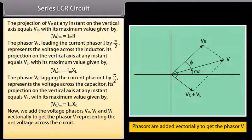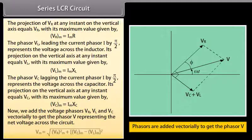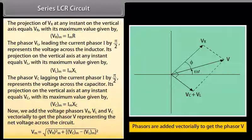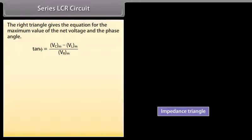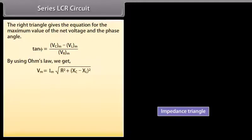We add the voltage phasors VR, VL, and VC vectorially to get the phasor V representing the net voltage across the circuit. V_max equals √(VR_max² + (VC_max − VL_max)²). The right triangle gives tan φ = (VC_max − VL_max) / VR_max. By using Ohm's law, Vm = Im × √(R² + (XC − XL)²).